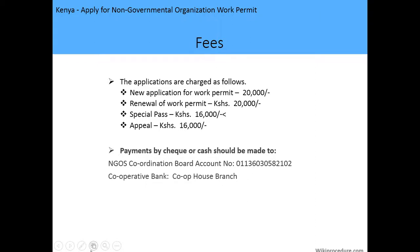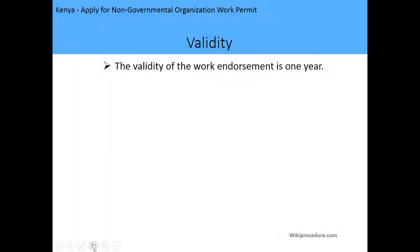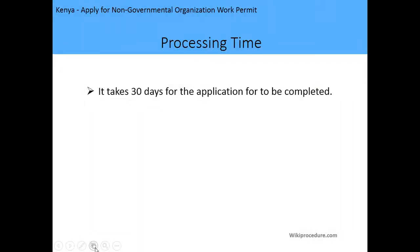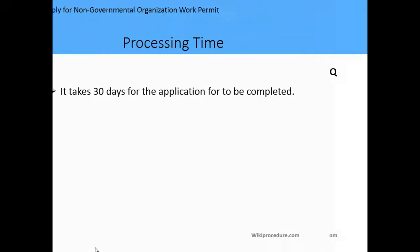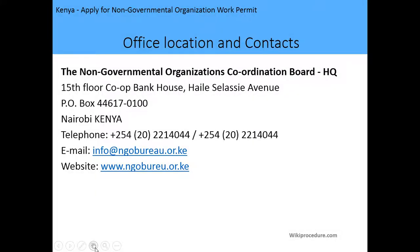The validity of the work permit endorsement will be one year, after which you will have to apply again for renewal together with the work permit. The processing time will be 30 days for the application to be completed; after 30 days you will receive a call to come and collect your work permit. The offices of the NGO coordination board are located at Cooperative Bank House in Haile Selassie Avenue, Nairobi, Kenya. You can visit their website at www.ngobureau.or.ke and get more information about regional offices there.